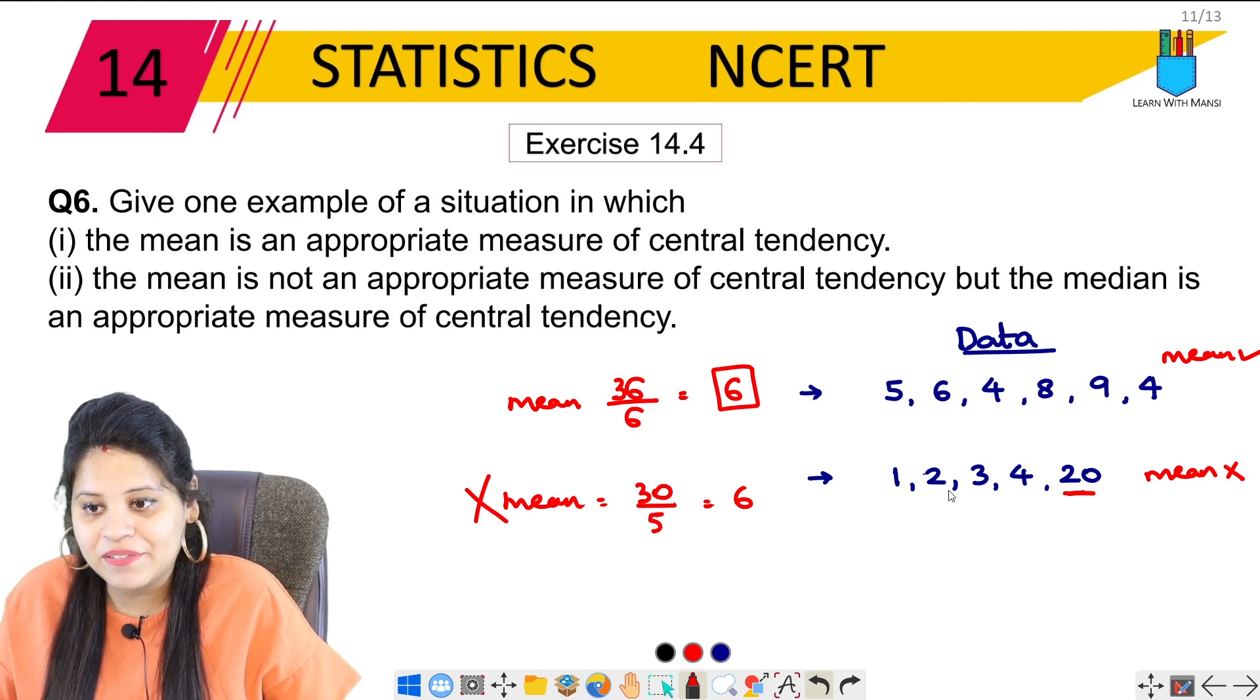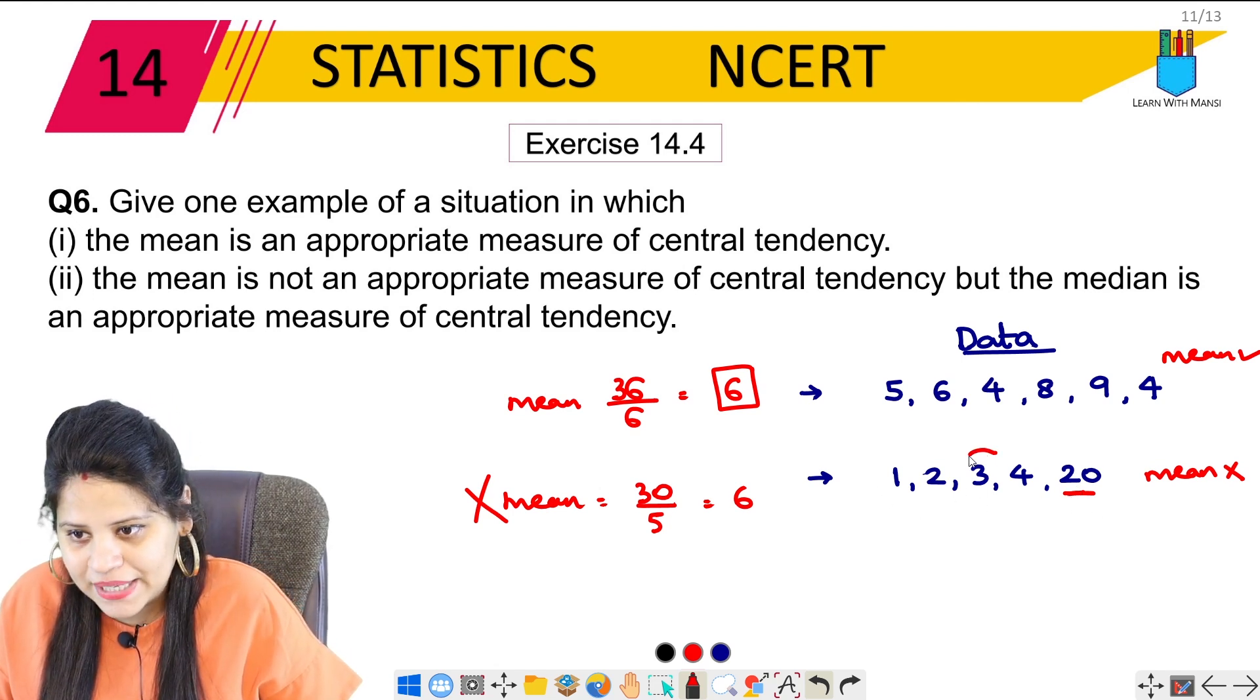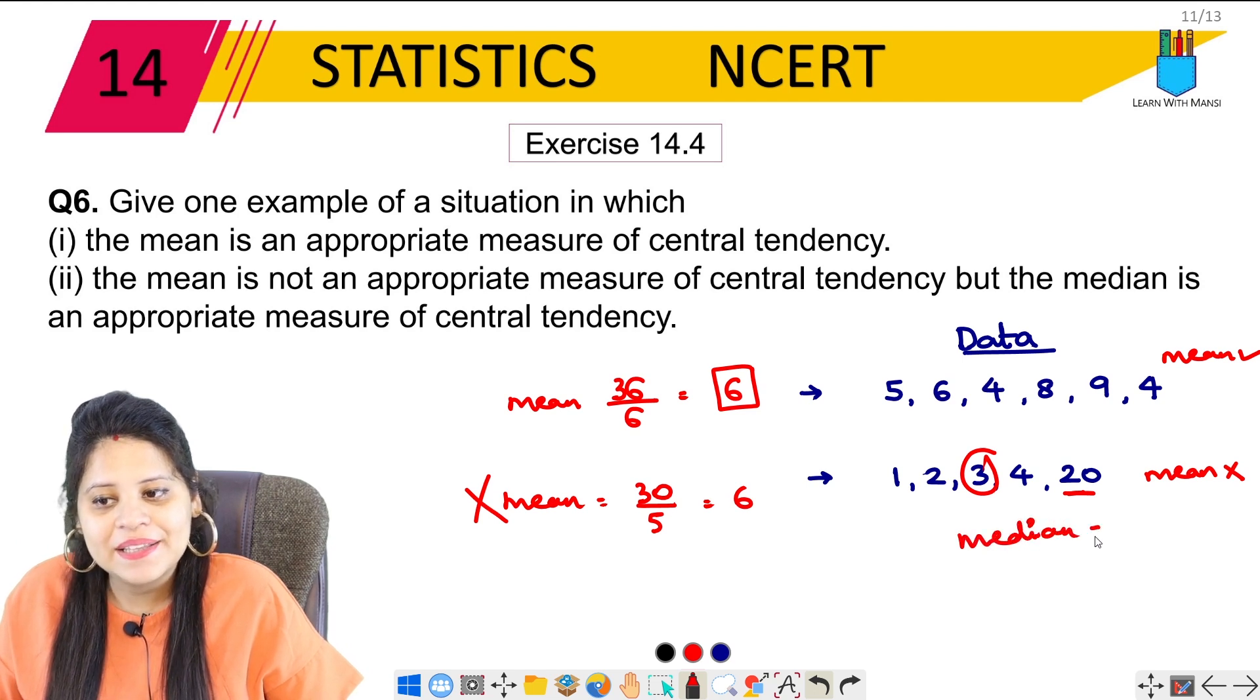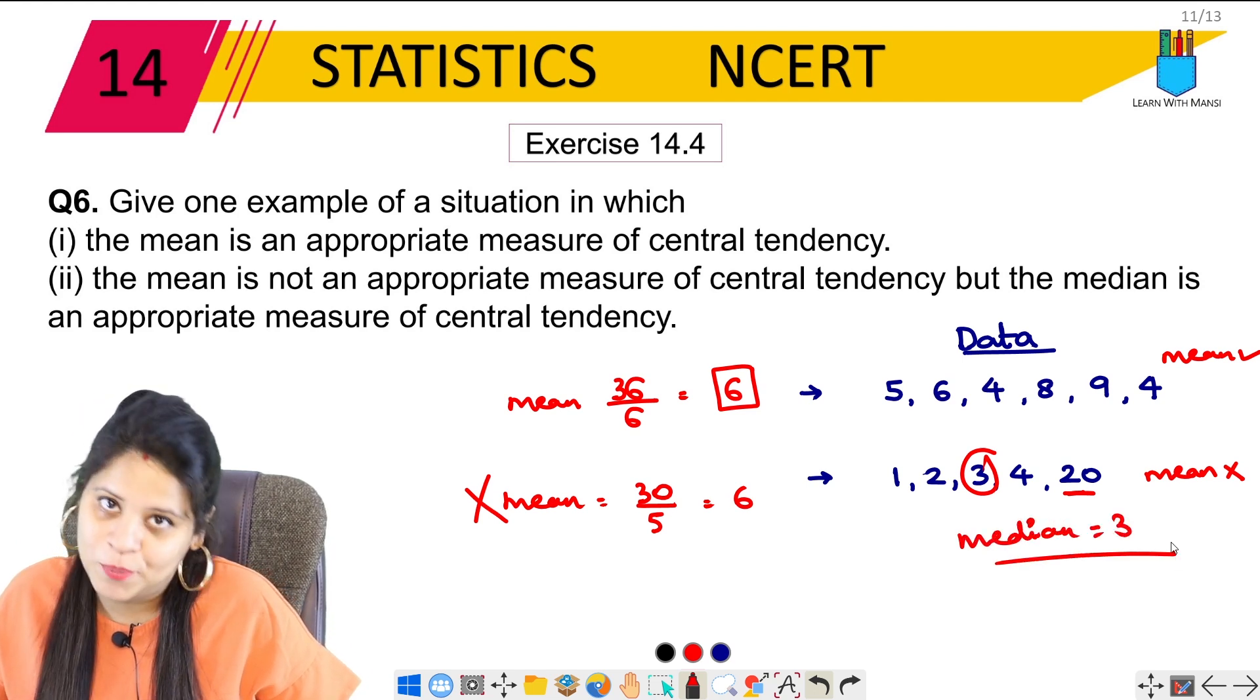In this case, if we calculate the median with 1, 2, 3, 5 digits, the median is 3. So in this case, the median is 3, which is more appropriate.